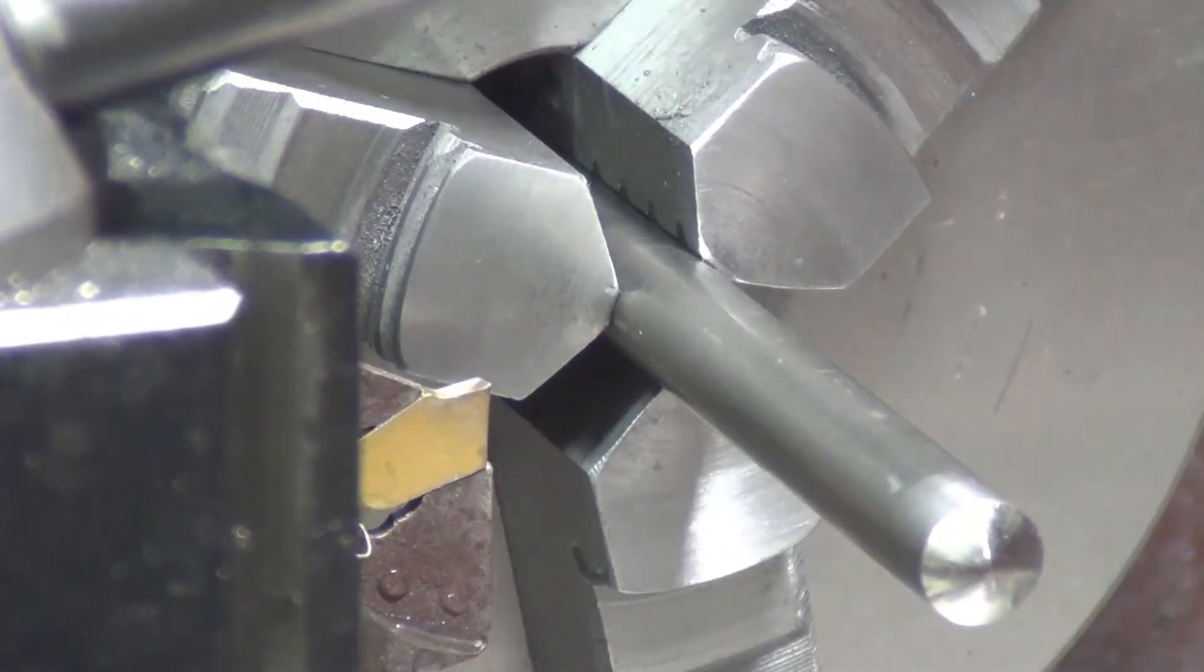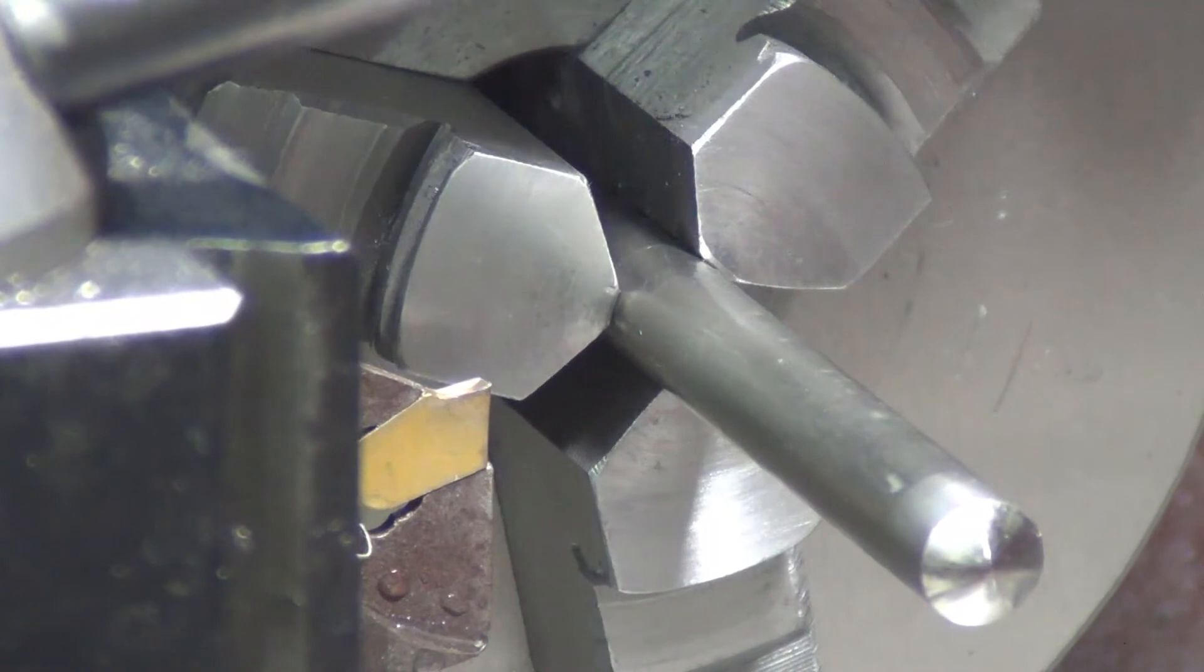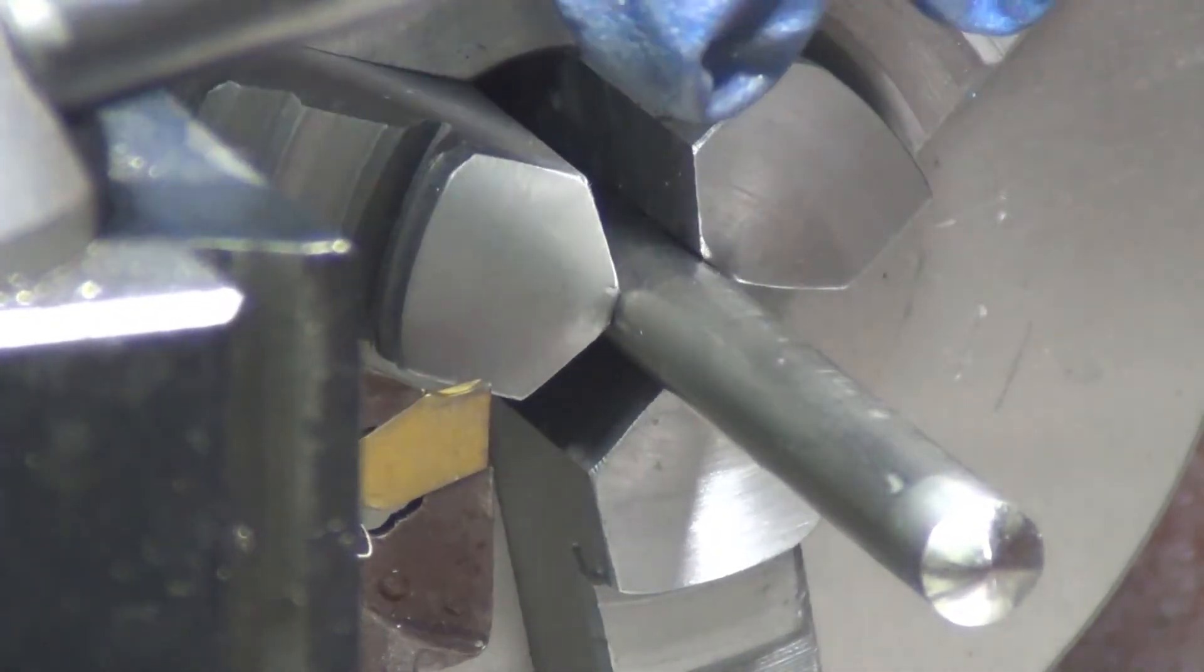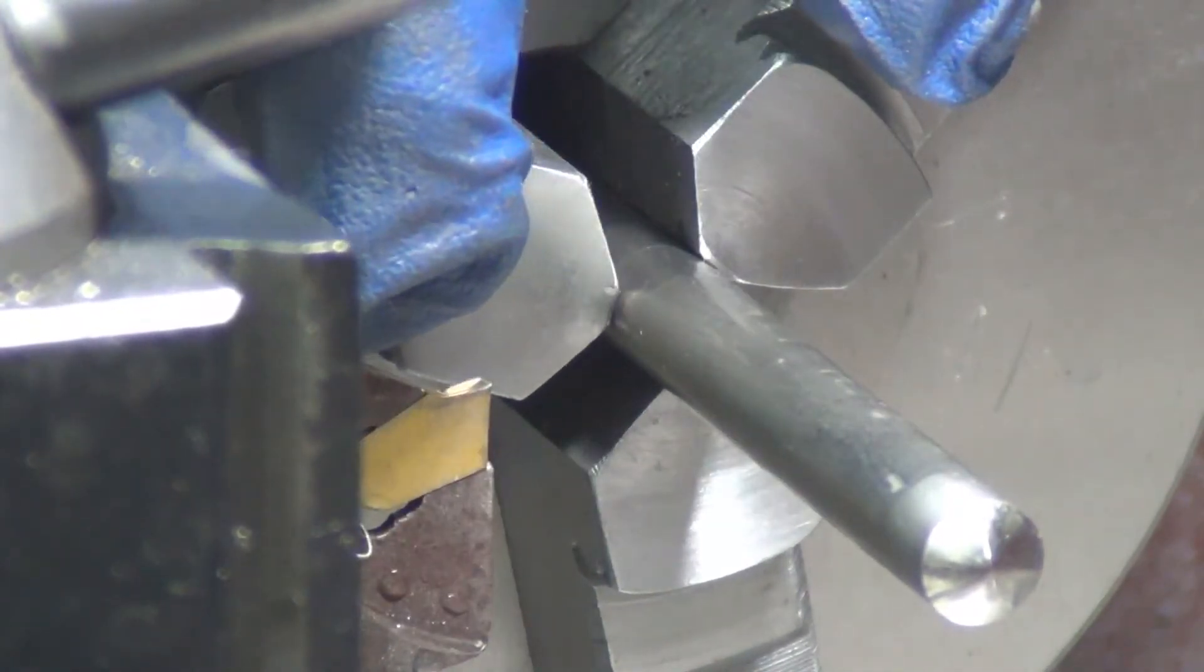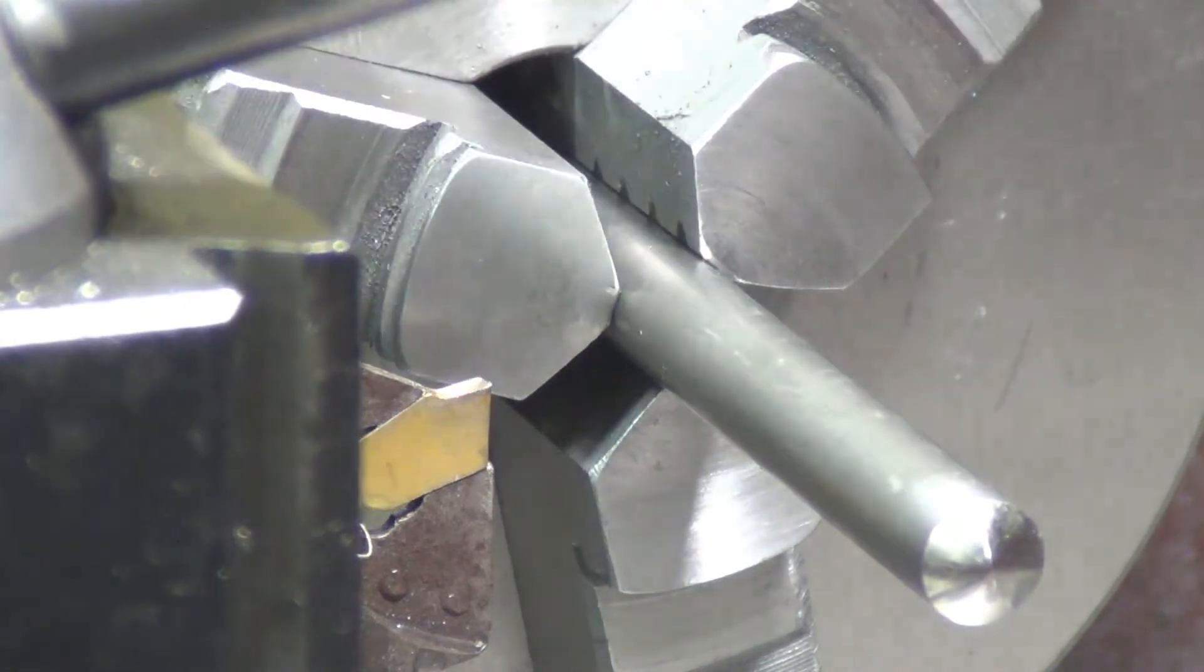I'll do that first and then it'll cut, and you get the idea just how nice it's cutting the stainless steel. Same feed speeds, everything's identical - I have not changed anything from doing the drill rod ones.